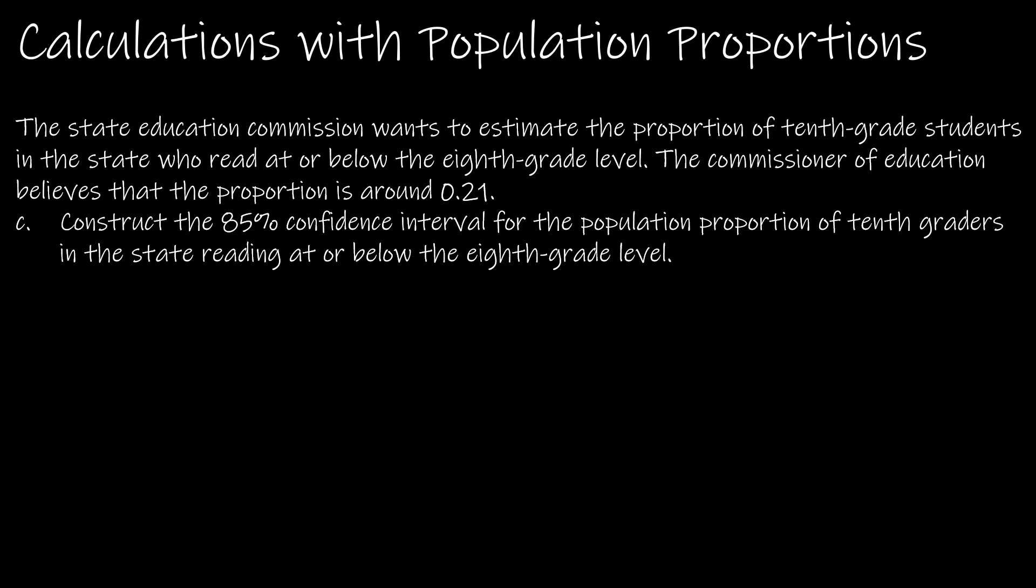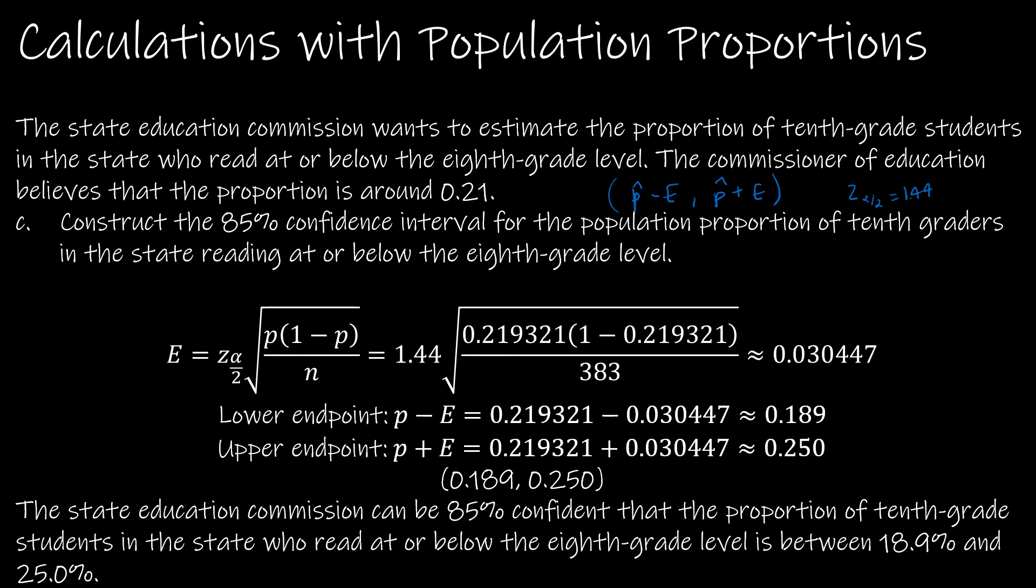The last question says construct the interval. We just found p hat. Remember p hat minus e and p hat plus e is what we're going to be doing. We already found the critical value, 1.44. So really we're finding the margin of error using the actual value we just found, the p hat value, and 1 minus p hat. Notice we're not using 0.21. We're using our observed value, our 383, and our 1.44 to find the margin of error.